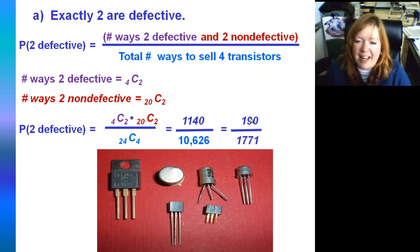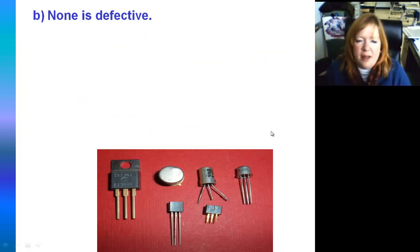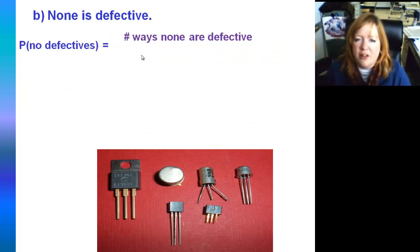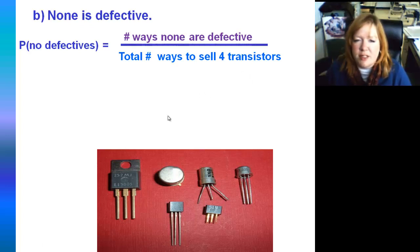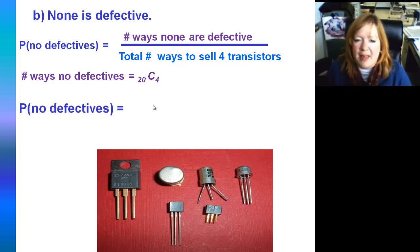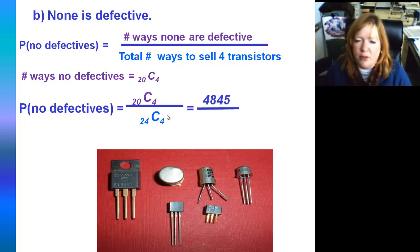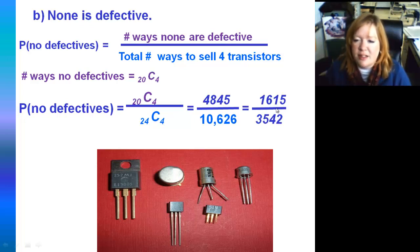One thing about statistics — you've got to like numbers. For none being defective: the probability is the number of ways you pick no defective ones out of the total ways to sell four transistors. There are 20 non-defective and you're choosing four of them, so it's 20 choose four out of our denominator. That gives 4,845 out of 10,626, which reduces to 1,615 over 3,542.